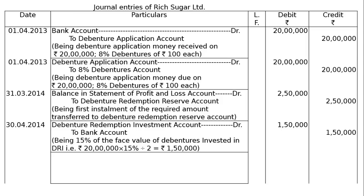When the company is transferring Rs 2,50,000 to DRR, we also have to invest 15% of Rs 20,00,000 = Rs 3,00,000 divided by 2 installments = Rs 1,50,000 in the Debenture Redemption Investment account. Entry: Debenture Redemption Investment account debited to Bank account — Rs 1,50,000 — being 15% of the face value of debentures invested in Debenture Redemption Investment account, now and in the next year.